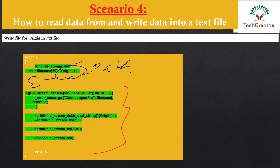Otherwise, we are going to extract the origin value. We already correlated and parameterized the origin value on our request, but since it is a string character, we can't directly pass it in our loader. So we are going to evaluate it first, and after evaluating, we print that value. We use fprintf with the file name, and \n so that each entry goes to a new line. That's why we use that syntax.